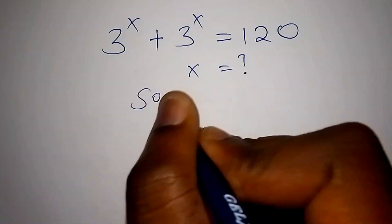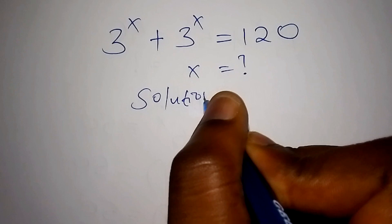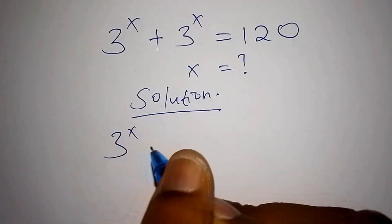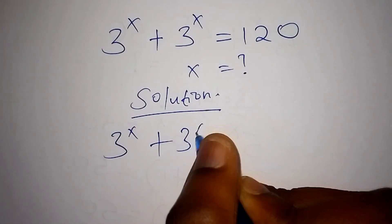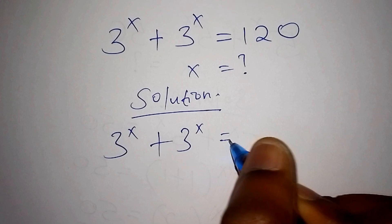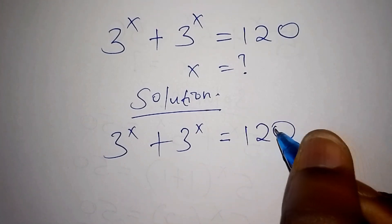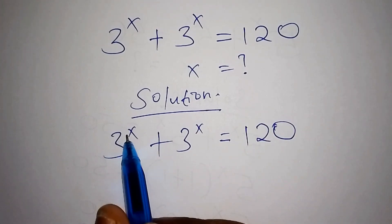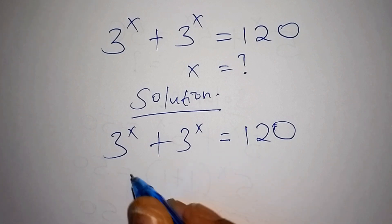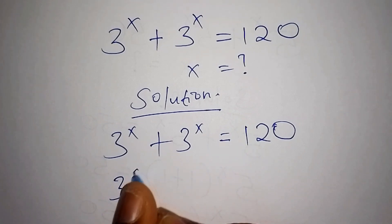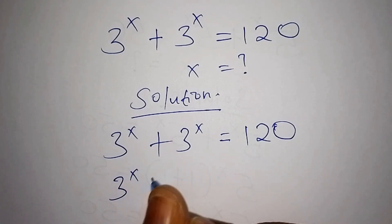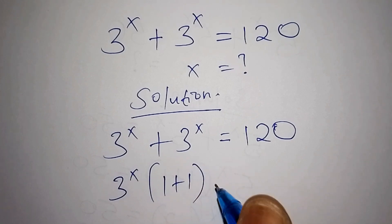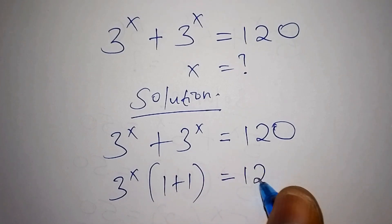On the solution, we have 3 to the power of x plus 3 to the power of x equals 120. The first thing we need to do is factorize. This can be written as 3 to the power of x into bracket 1 plus 1, close the bracket, equals 120.